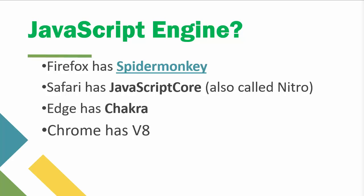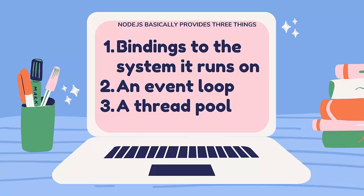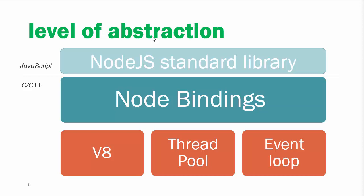Using JavaScript alone, you have no IO or system calls — you can't read files or open network connections. This is where Node.js comes in. Node.js provides three things: bindings to the native system it runs on, an event loop, and a thread pool. With these three components we get a platform that supports non-blocking IO through asynchronous programming, giving significantly better performance over traditional architectures. In the diagram you can see the level of abstraction: the Node.js standard library written in JavaScript sits on top of Node bindings written in C/C++, which run on the V8 engine using the thread pool and event loop.